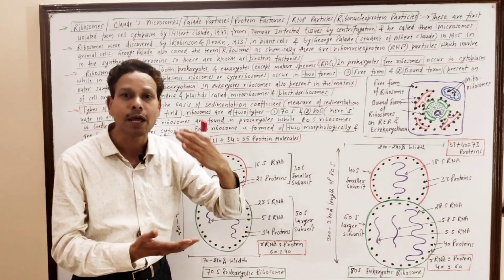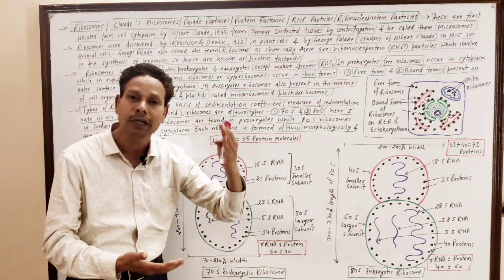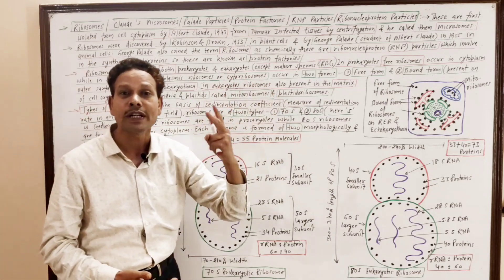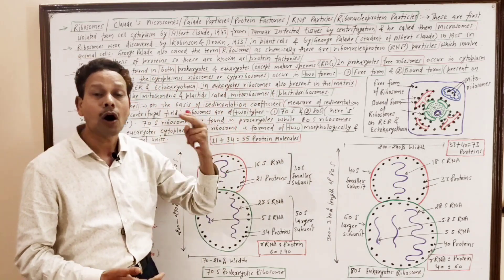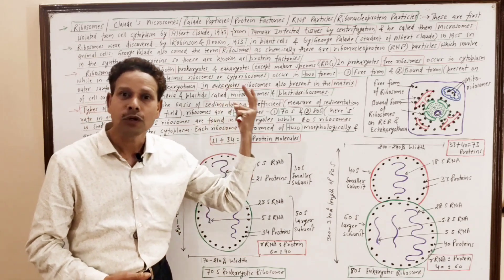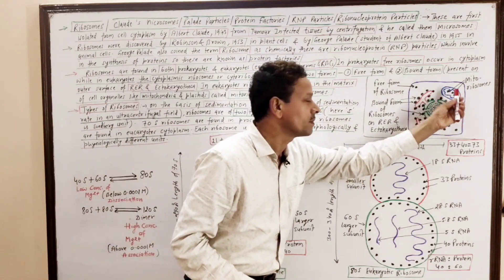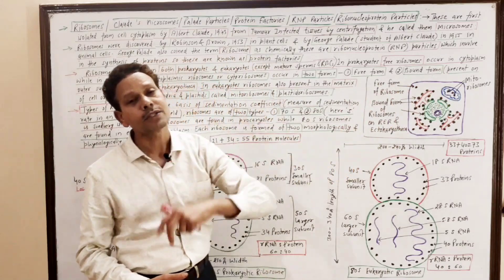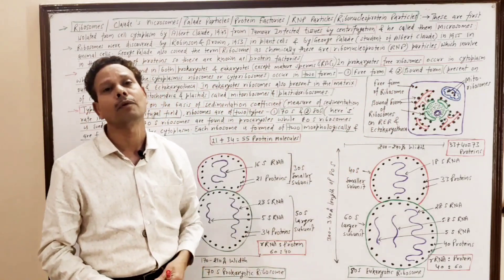Ribosomes are of two types: 70S and 80S. 70S ribosomes are found in prokaryotes, and 80S ribosomes are strictly in eukaryotes. 70S ribosomes also occur in some organelles like mitochondria and plastids — named mitoribosomes or plastidoribosomes. In the cytoplasm of eukaryotes, they may occur in free state or in bound form. In tomorrow's lecture, we'll discuss the ultrastructure of ribosomes.